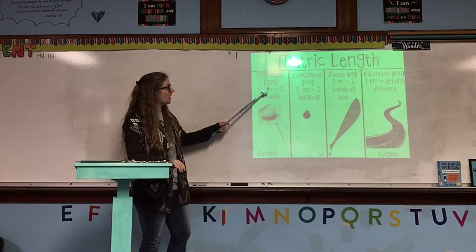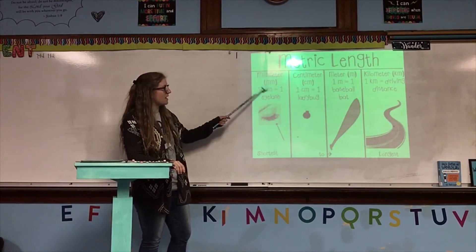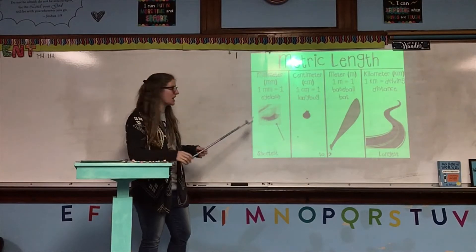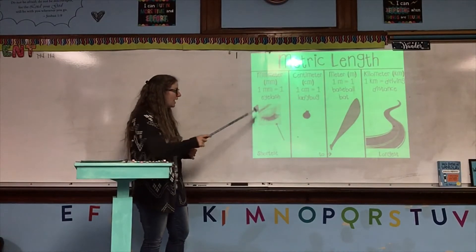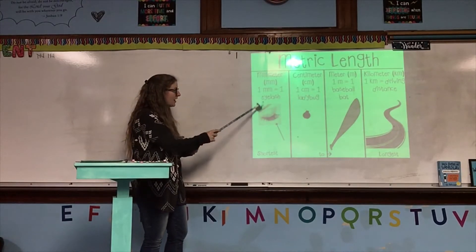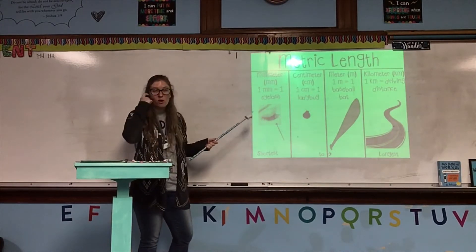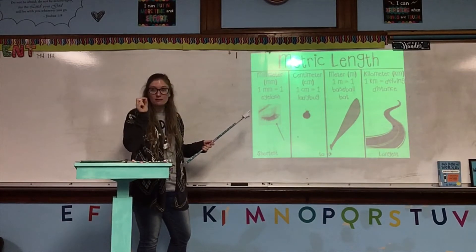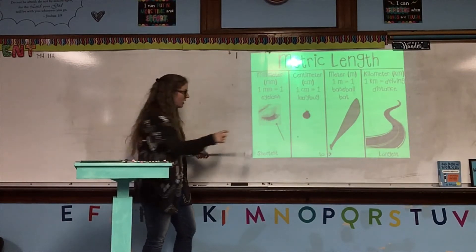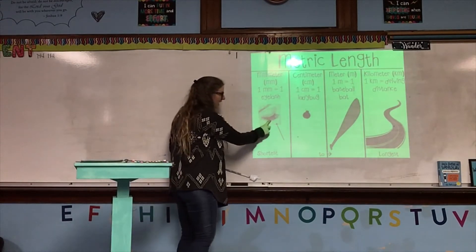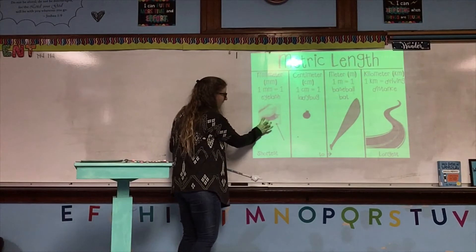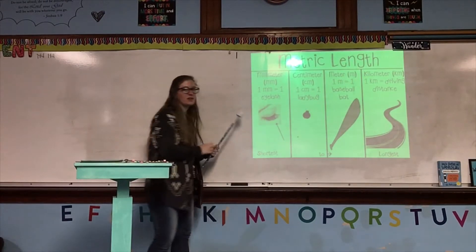The millimeter is abbreviated as mm — both are lowercase. One millimeter is about the width of one eyelash, not the length. So not from end to end, but about how wide it is. They are very, very tiny.